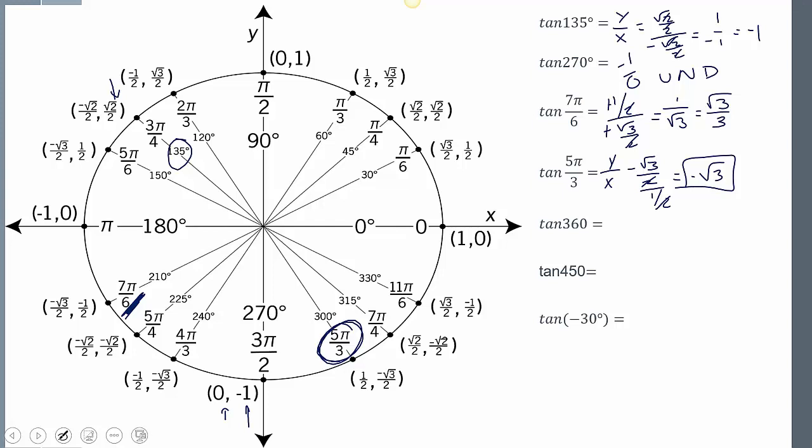Tangent of 360, right, this is also 360, because I have my full rotation. Sine over cosine, so I get 0.